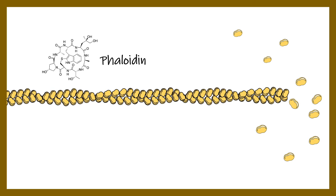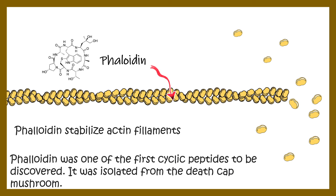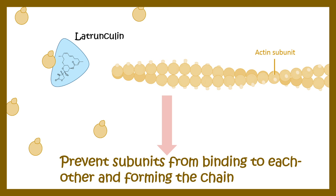Beyond proteins, there are other factors that affect actin filament stability. Phalloidin can bind to and stabilize the actin filament — it was initially isolated from the death cap mushroom. On the other hand, latrunculin prevents actin subunits from binding to each other and forming the chain, so chemical agents can also help polymerize or dissociate the actin filament.